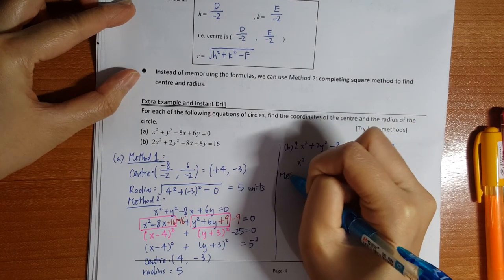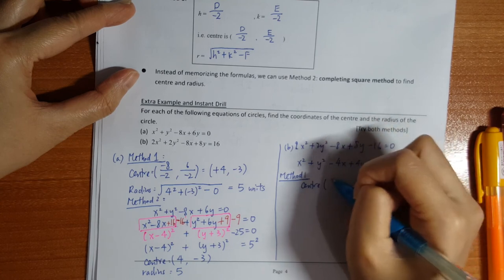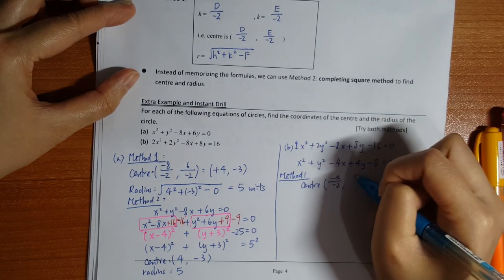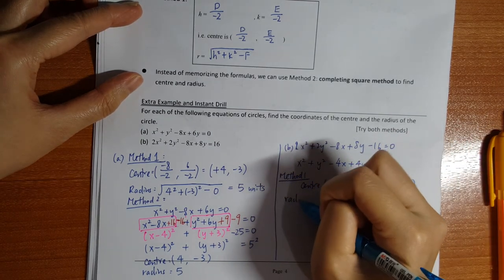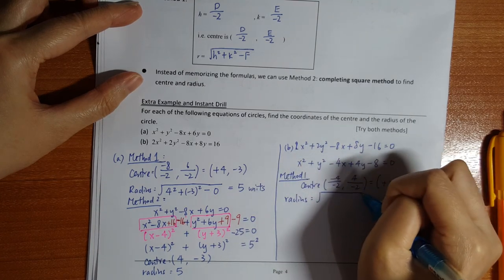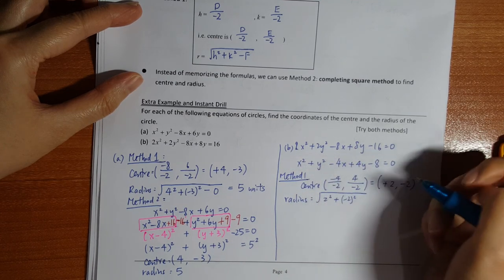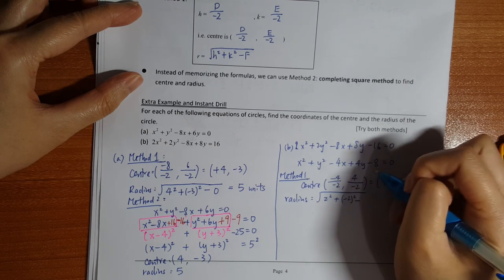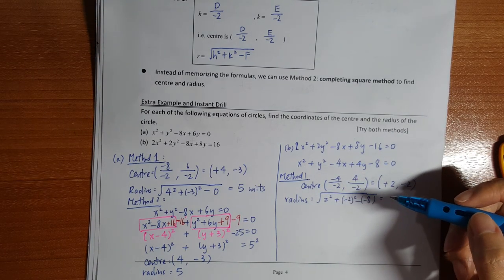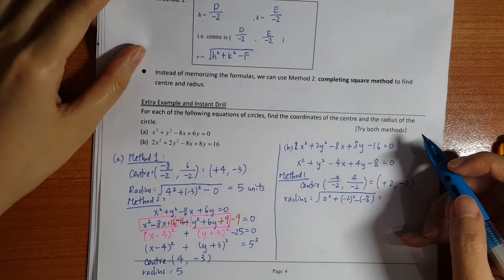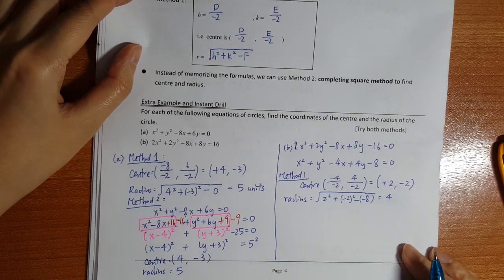Okay, then again, method 1. So the center would be D divided by negative 2 and also E divided by negative 2. So here would be positive 2 and negative 2. Radius would be square root, h squared, that means this square, plus k squared, that means this one square, and then minus F. F is here, negative 8. So that's 4 plus 4, then subtract negative 8. So that's 16, square root of 16 is 4.